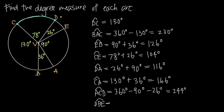Finally, arc DBE. Starting at D and going one way around to B and then to E would pass D again, giving more than 360 degrees. So we go the other direction — counterclockwise from D, around to B, and then to E. The only angle not included in that arc is the 26-degree angle DVE. So we do 360 minus 26 degrees and get a degree measure of 334 degrees for arc DBE. And that's how you find the degree measures of major and minor arcs using interior angle measures in a circle.